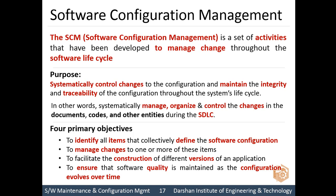The third objective is to facilitate the construction of different versions of an application. Software development is a continuous process — we give the first version, then after a few days a second version, maybe after a few months a third version. That version management is the third goal. The fourth objective is to ensure that software quality is maintained as the configuration evolves over time — the quality of the software must be maintained across all versions and changes.